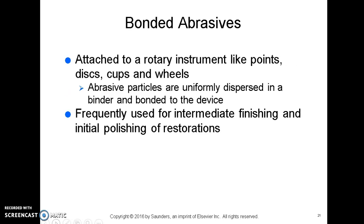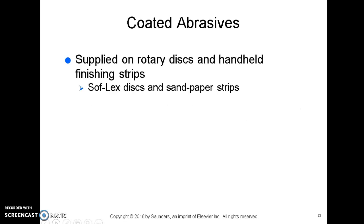Bonded abrasives are attached to a rotary instrument like a point, disc, cup, or wheel. The abrasive particles are uniformly dispersed in a binder and bonded to that device. These are frequently used for intermediate finishing and initial polishing of restorations. Coated abrasives are supplied on rotary discs and handheld finishing strips — for example, the soft flex discs doctors use to begin polishing a composite and the sandpaper strips used interproximally.